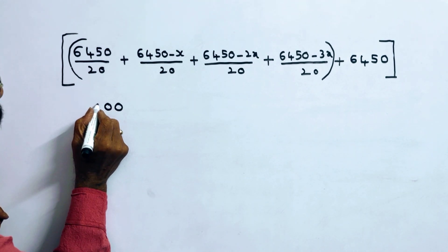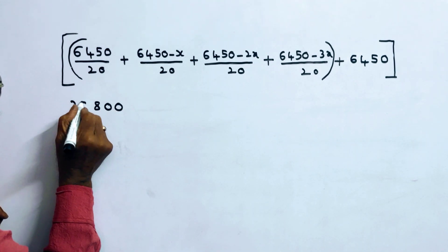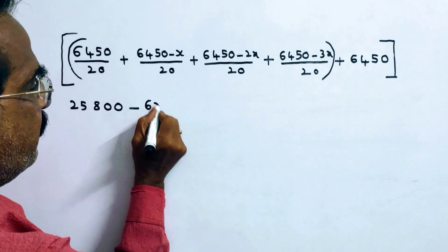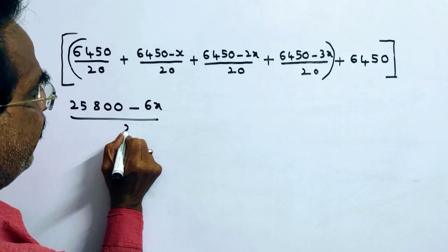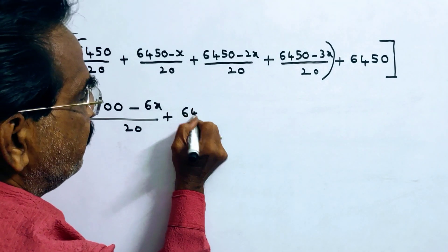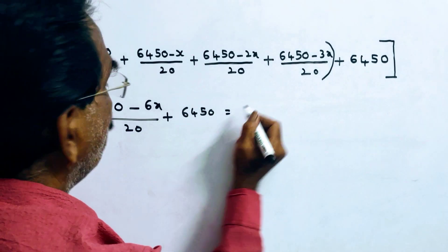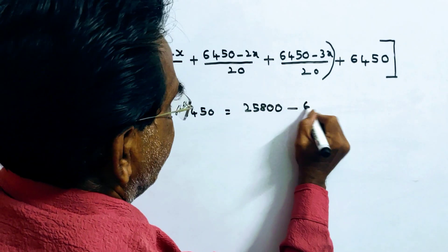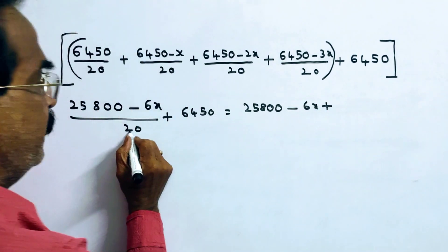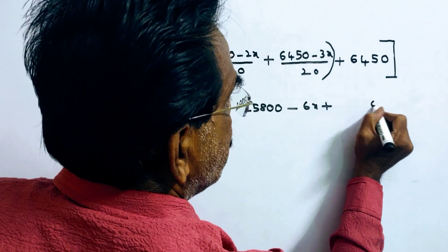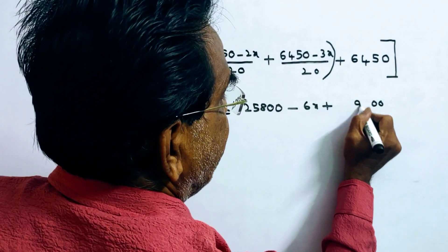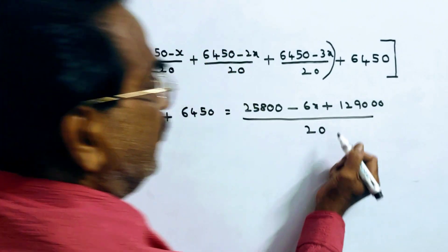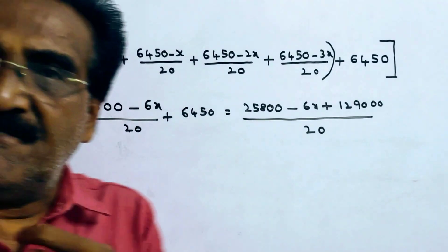So 4 times 6450 is 25,800 minus 6X, all by 20, plus 6,450. This equals 25,800 minus 6X plus 129,000, which is 154,800 minus 6X, all by 20. This is the total amount payable by Vikas.